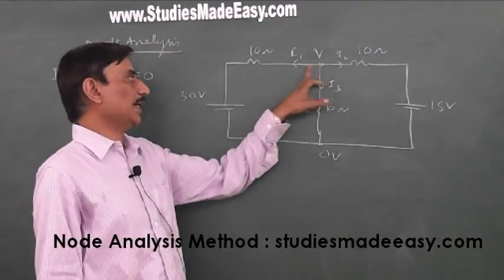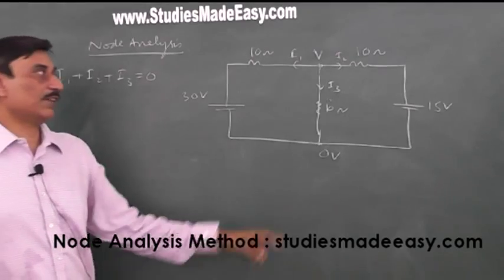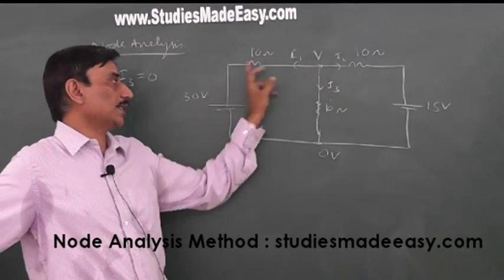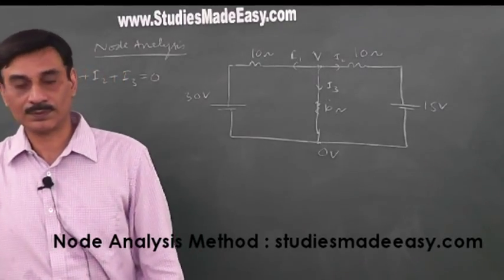I have deliberately taken that is I1, I2, I3 moving away from this node. So I have taken the potential as a higher potential as compared to the other end of the resistor.